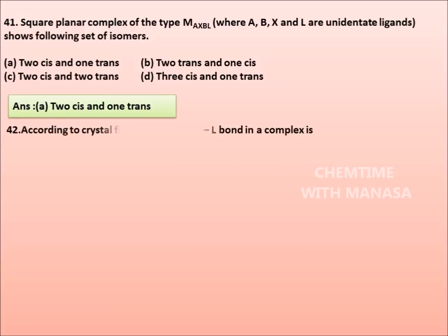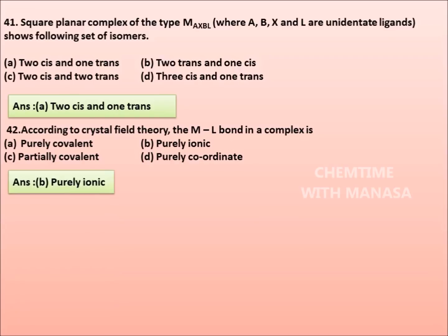42. According to crystal field theory, the M-L bond between central metal atom and ligand in a complex is: purely covalent, purely ionic, partially covalent, purely coordinate. Correct answer is option B, purely ionic.